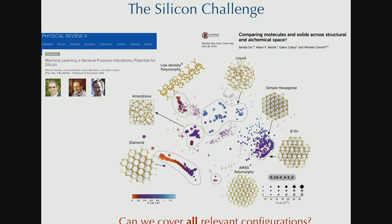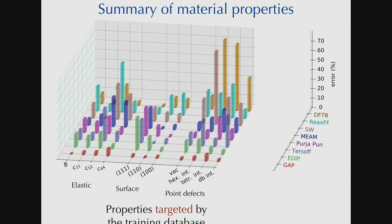The last example is what I call a silicon challenge, right? Ten years ago, when we made all these promises, we said, let's make a potential that just does everything. Can we, in fact, do that? And silicon is the material in which to try. Here are lots and lots of different crystal structures have been described in the literature. Can we cover, can we have a database of DFT calculations that covers all relevant configurations? The answer is that we can.